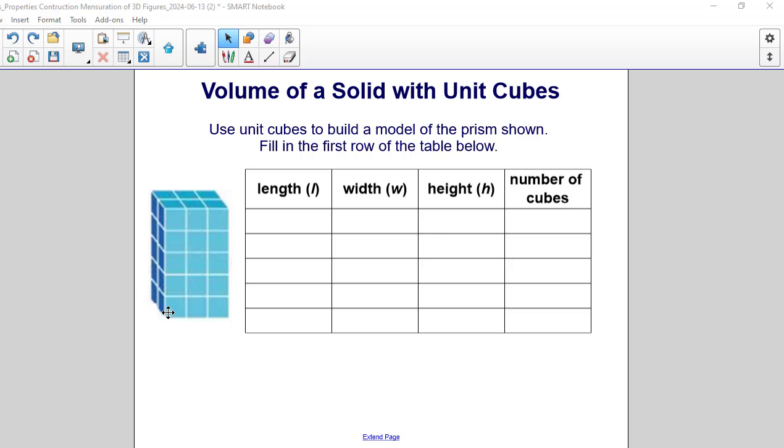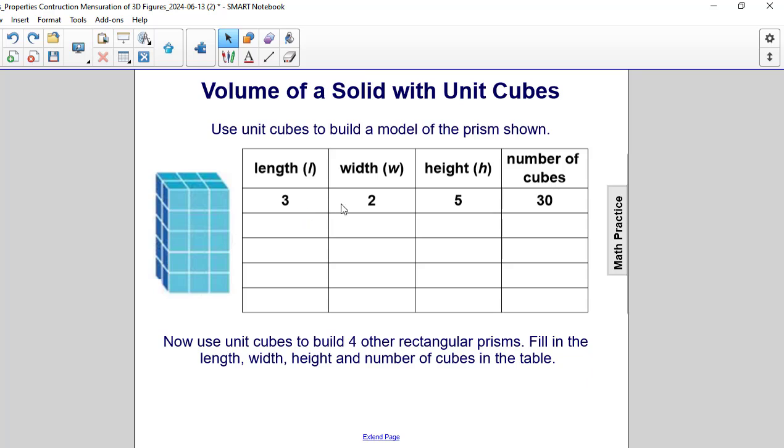How many layers are going up? We have one, two, three, four, and five. So there are five layers. So when we complete this table, it's going to look like this. Three for the length, two for the width, and five for the height.